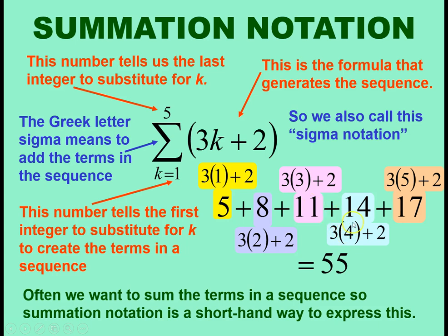Then 4, 3 times 4 plus 2 is 14. And then 5, 3 times 5 plus 2 is 17.